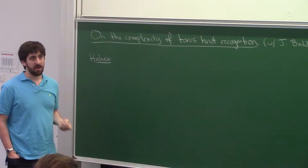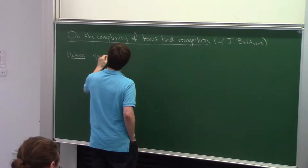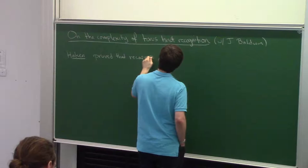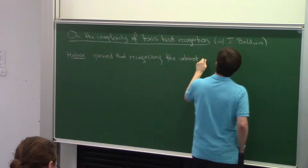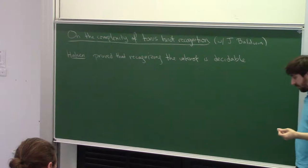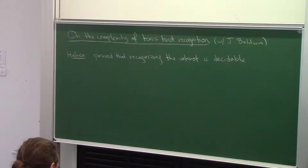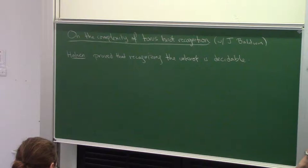This goes back to Haken who, around the time he invented normal surface theory, proved that recognizing the unknot is a decidable question. The way to do this is to say: if I have an unknot, then it's got a spanning surface which is a disk. So you triangulate the complement as a knot and just search for normal surfaces that might be a disk. Eventually you find one and that's great, or maybe you don't and you get outside the bounds of where you expect such a disk to live.